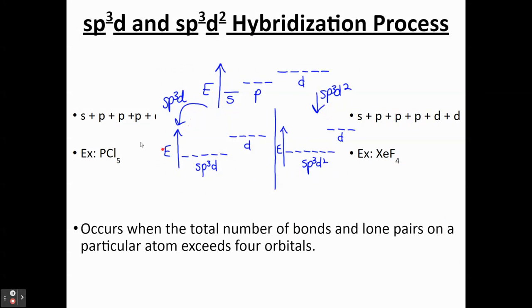And so to do that, what you want to do is essentially you need to combine 1S, 3Ps, and 2Ds. And so when you merge those together or hybridize them, you get your SP3D2. And then three of them remain unhybridized.